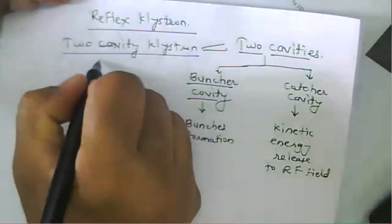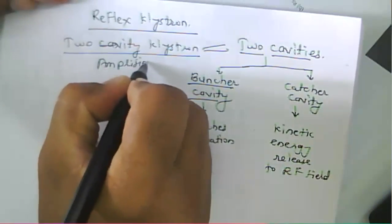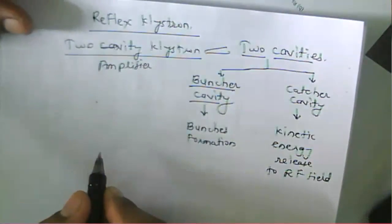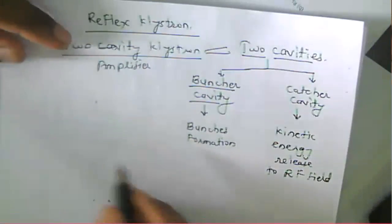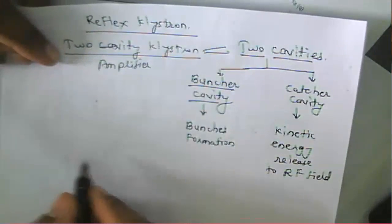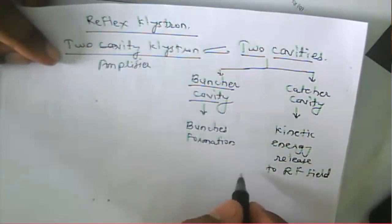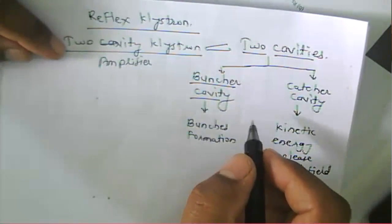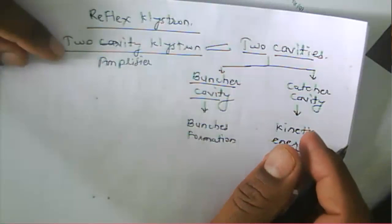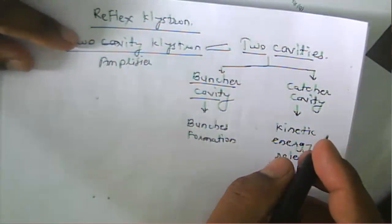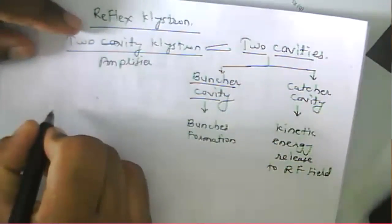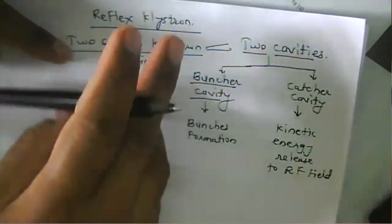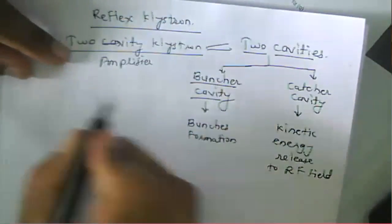A two-cavity klystron acts as an amplifier. We can also use a two-cavity klystron as an oscillator — in that case, we have to provide feedback from the catcher cavity to the buncher cavity. But for most applications, the two-cavity klystron is used as an amplifier, not as an oscillator.